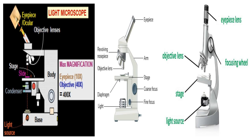As shown, the light microscope components are: eyepiece or ocular lens, objective lenses, nose piece, arm, stage, diaphragm, coarse focus knob, fine focus knob, light source, condenser, and base.